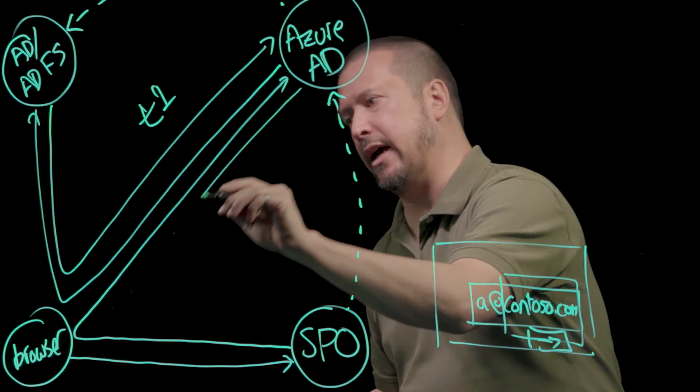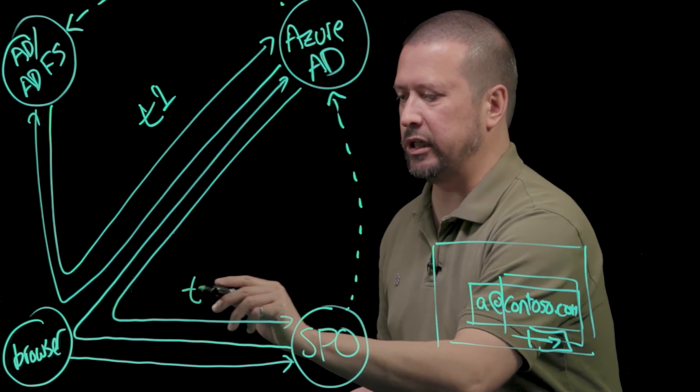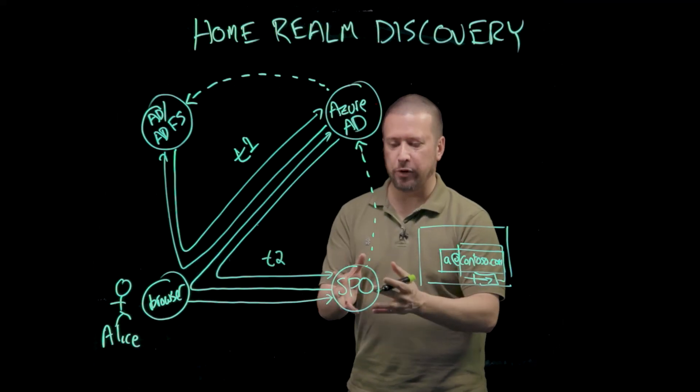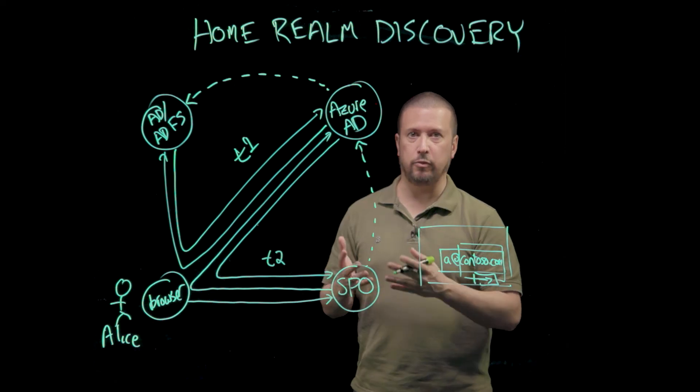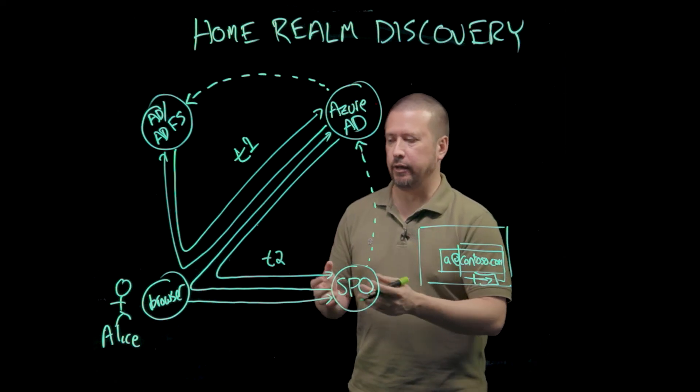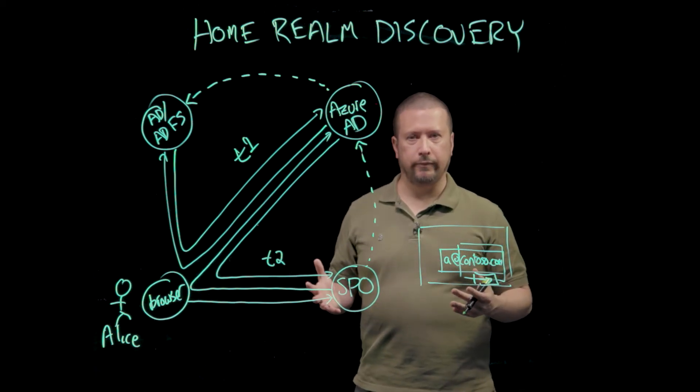Of course, it does that by sending a token through a post. We'll call this token T2. SharePoint Online, through knowing that it has a trust relationship with Azure AD and knows where to find the sign-in keys for Azure AD, can validate the signature on that token. It can know that it's Alice, and it can go on its way.